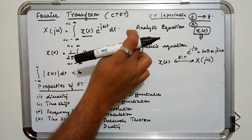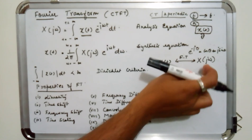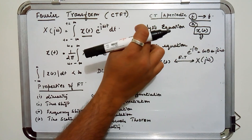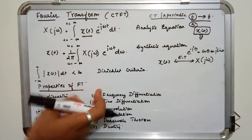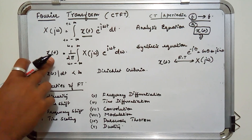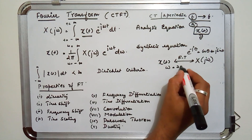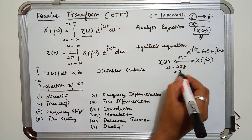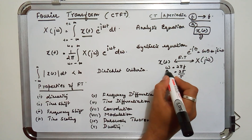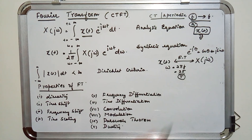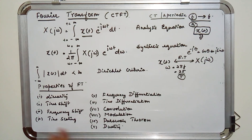We have seen that if you have x(T) and want to convert it to x(jω), you use the analysis equation, and by the synthesis equation you get back x(T) from x(jω). Here, ω is 2πf, or 2π divided by T, which is the angular frequency, and T is the fundamental period. This continuous time Fourier transform exhibits different properties, which are listed here, and I will be proving some of them.